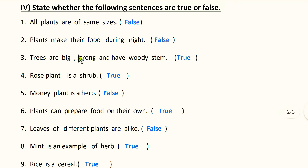Next bit: state whether the following statements are true or false. Ten statements are given. First: all plants are of same sizes — false. We see different types of plants around us; different plants are of different shapes and sizes. Second: plants make their food during night — false. Plants prepare their food during daytime because they need sunlight to prepare their own food.